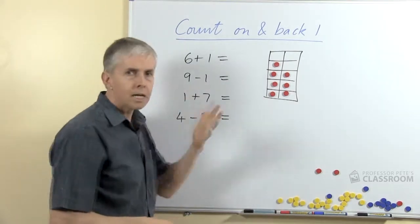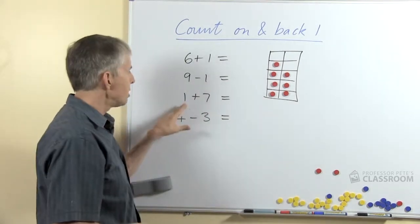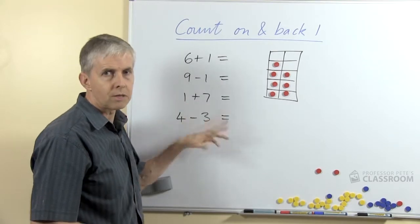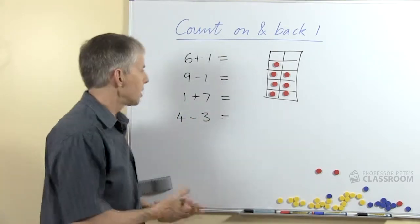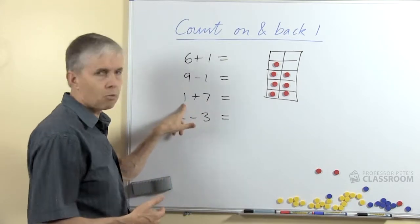1 plus 7, again using a count on strategy. Of course we don't start from 1 and then count on 7, that defeats the whole purpose of memorizing number facts, but if we start with the 7 and count on 1.